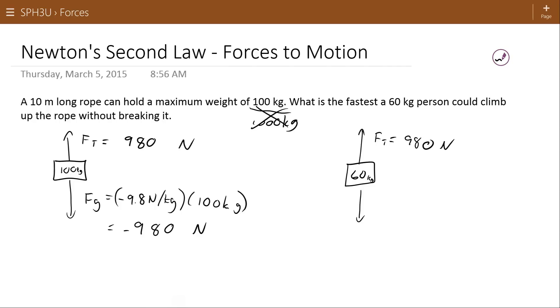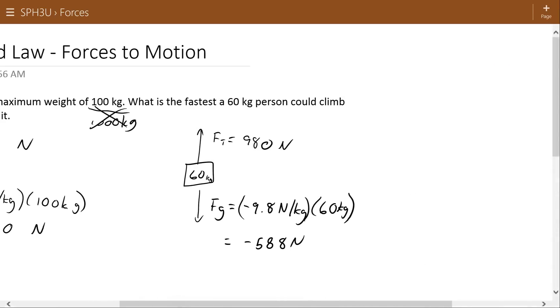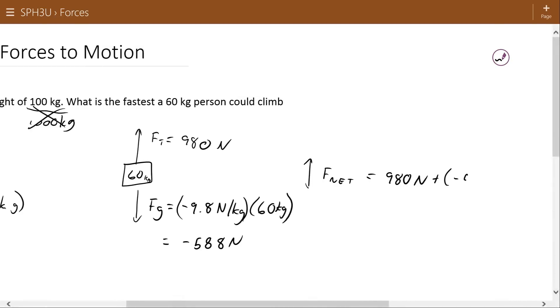The force of tension could be 980 newtons. So again, when this person is climbing up the rope, they're going to be off the ground so they won't have any normal force to support their weight. So 9.8 newtons per kilogram times their 60 kilogram mass gives us the force of gravity that would be acting on them - 588 newtons negative because it's down.